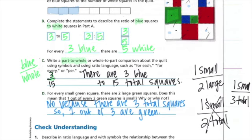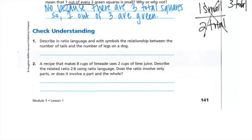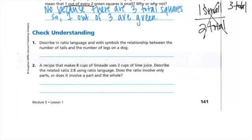Okay, now I want you to pause the video and I want you to do the check your understanding and then come back and check your work when you're done. All right, good job. So it says, describe the ratio, with ratio language and with symbols, the relationship between the number of tails and the number of legs on a dog. So how many tails are on a dog? One. How many legs are usually on a dog? Four. So we could say something like for every one tail there are four legs, or you could say there are four legs to every one tail. There's many ways we could write it but it needs to be one and four.